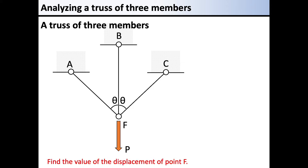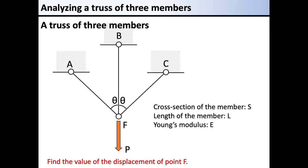You need to find the value of the displacement of point F. When a load P acts downward at point F, the three members are stretched down together, and point F moves downward. The cross-section of the member is S, the length of the member is L, and the Young's modulus is E.